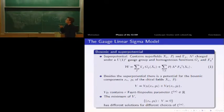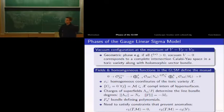One possible phase is the geometric phase. For certain models, if you choose all these parameters to be larger than zero and consider the vacuum configuration, you get as resulting space a complete intersection of hypersurfaces in a toric variety.